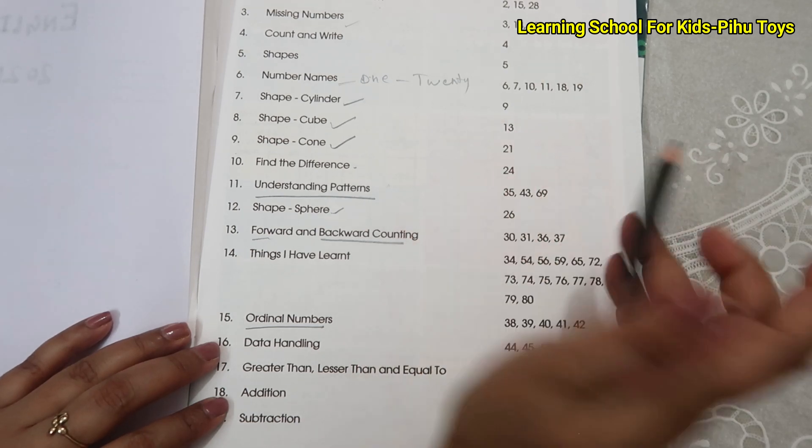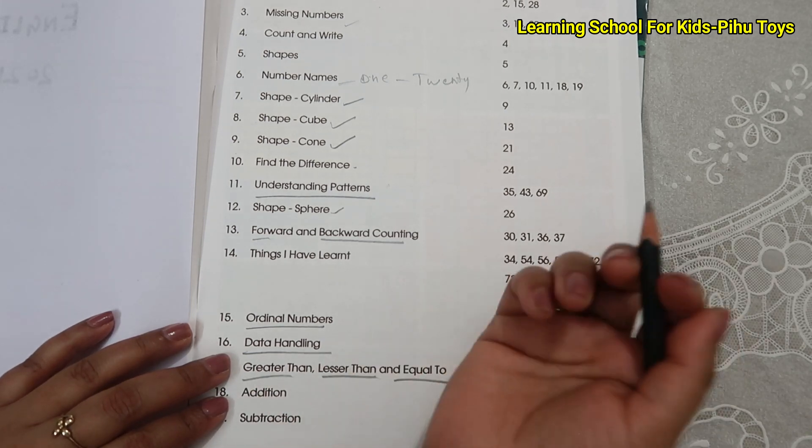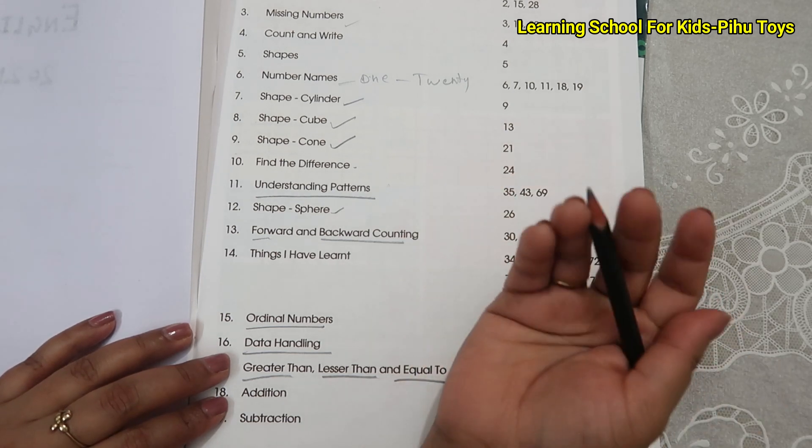And then the data handling is taught as greater than, less than and equal to. They are taught to the children.